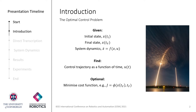Usually, an optimal control problem is posed by the initial state of a system, a desired final state, and the dynamics of the system itself. The goal is to find a control trajectory as a function of time which drives the system from the initial state to the goal state. Often, we also consider an objective function to be either minimized or maximized. The picture on the right is a long exposure photograph of a rocket trajectory — landing a rocket stage is an example problem where optimal control can be applied. For the rest of this presentation, we'll be focusing on solving trajectory optimization problems in robotics.